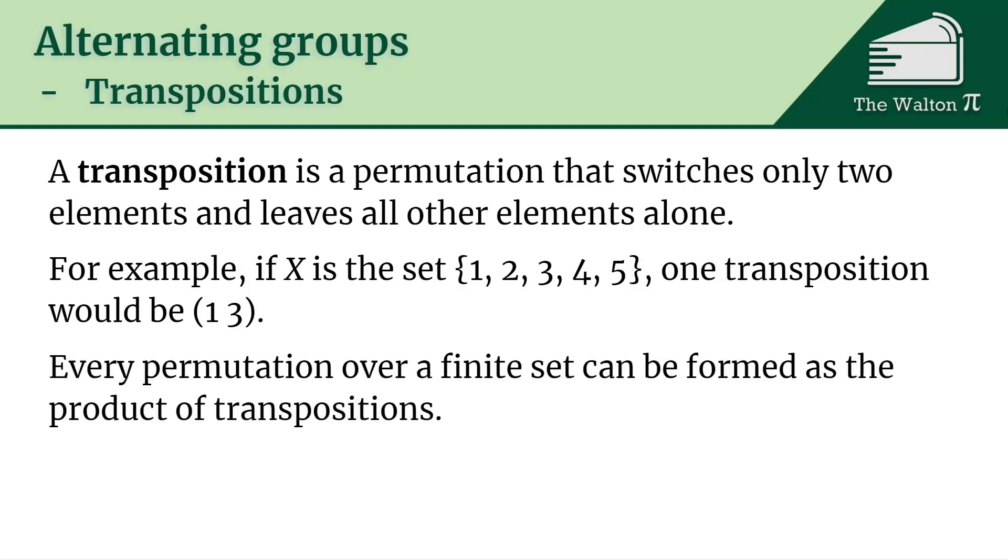Every permutation over a finite set can be formed as the product of transpositions. We write the product by just listing them next to each other in the order they come. For example, (1 2 3) is (1 2) multiplied by (2 3).